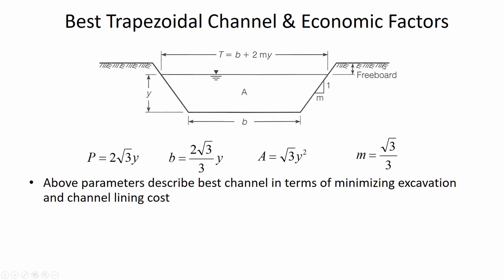One other note is freeboard — that excess capacity at the top of the channel. You'd want to provide a little extra flow capacity in a trapezoidal channel because you might have more flow than originally expected. On top of that, the additional freeboard gives capacity for wind-driven waves on a windy day, or splashing and waves related to a hydraulic jump upstream or downstream.